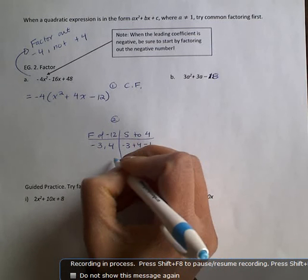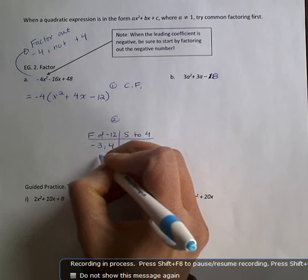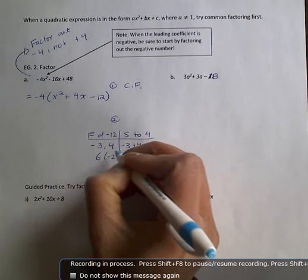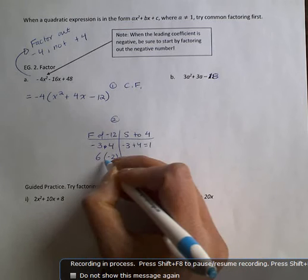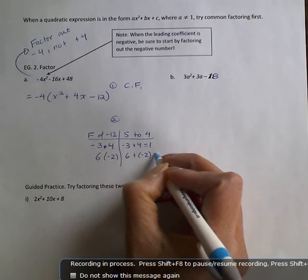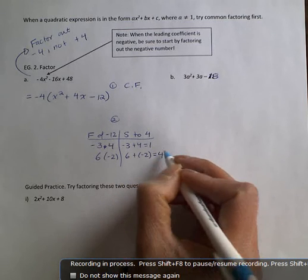Let's try 6 and 2. And then I want to put a negative in with one of the numbers. So 6 times negative 2 is negative 12. And when I add 6 plus negative 2 together, I do get 4. That's what I was looking for. So these are my values of R and S.